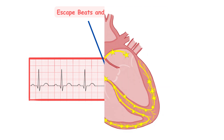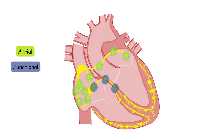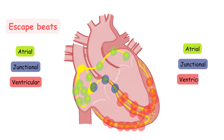Depending on which level the focus that starts to pace belongs to, we distinguish atrial, junctional, and ventricular escape beats and atrial, junctional, and ventricular escape rhythms.